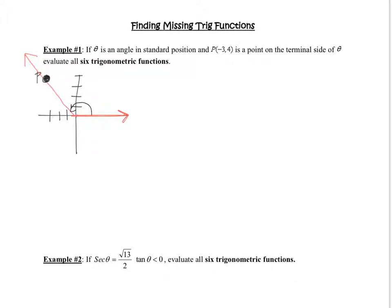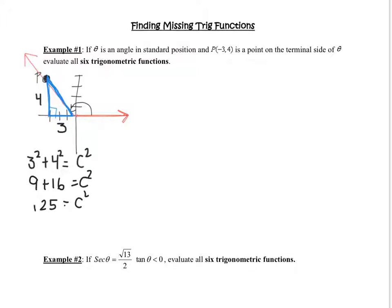We can make a right triangle by dropping a perpendicular line. The horizontal leg is three and the vertical leg is four. We need the hypotenuse, so we use the Pythagorean theorem: a² + b² = c². That gives us 9 + 16 = 25, so c = 5. The hypotenuse is five. Now we have a complete picture of the right triangle.